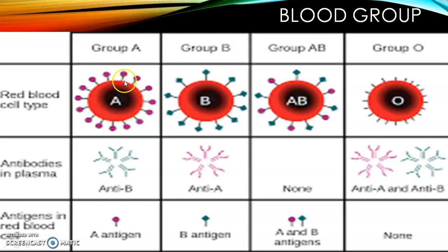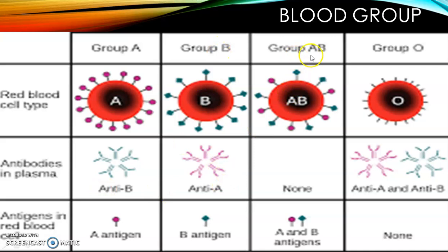Opposite antibodies are always present for each antigen. Group A persons have antibody B, group B persons have antibody A. If a person had the same antigen and antibody together, they would agglutinate and lyse each other — that is why opposite antibodies are present. Group AB persons have no antibodies because they have both antigens. Group O persons have no antigens, so they carry both antibodies A and B. This is why AB group persons are called universal recipients and O group persons are universal donors.